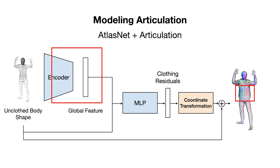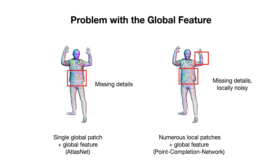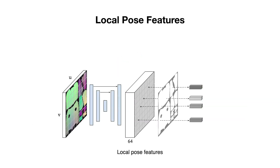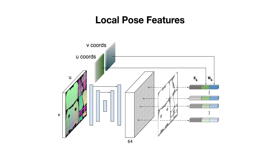This problem originates from the use of a global shape code. For either modeling with a single global patch as in AtlasNet, or many local patches as done in the point completion network, learning shapes from only global statistics is insufficient and does not generalize well. We replace the global features of these methods with much lower-dimensional local features. Given an input body, we record the 3D locations of points on the body surface using a 2D parameterization called a UV positional map. Each valid pixel on the UV map corresponds to a point in 3D space. In this way, we can extract local pose features for local shape regression using 2D fully convolutional networks. Additionally, we feed the decoder the UV coordinates to distinguish each element and provide proximity information between the patches.